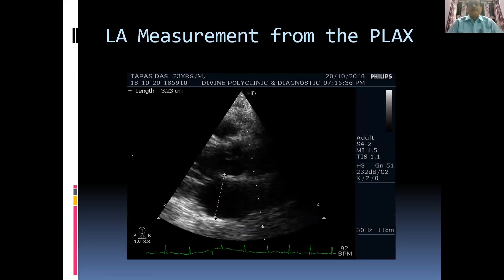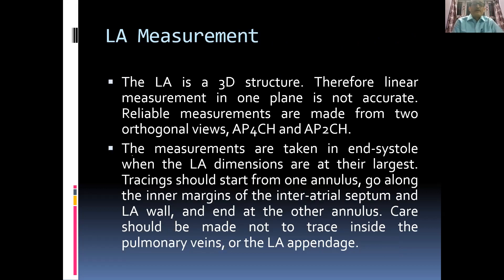For left atrial measurement, the anteroposterior diameter is measured from leading edge to leading edge at the level of the aortic valve. However, taking linear measurements of the LA can sometimes be misleading, because the LA is a three-dimensional structure and linear measurement in one plane is not accurate.